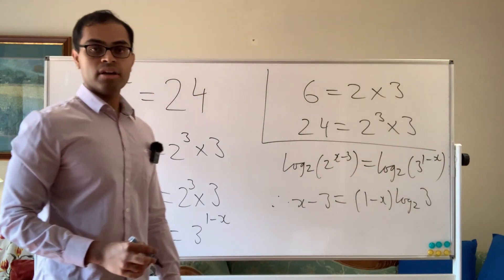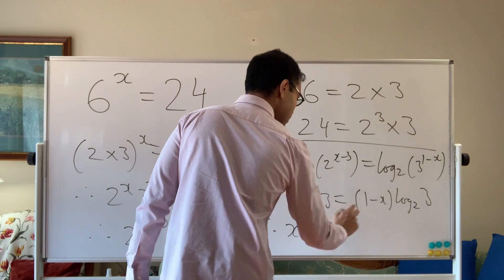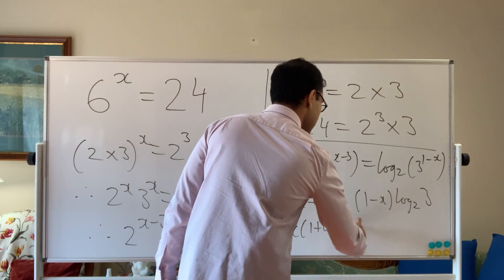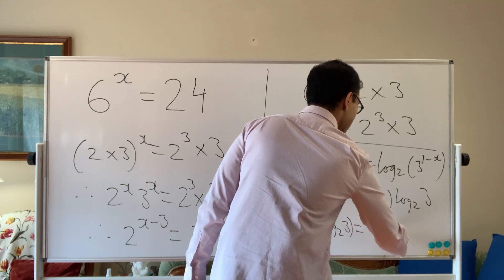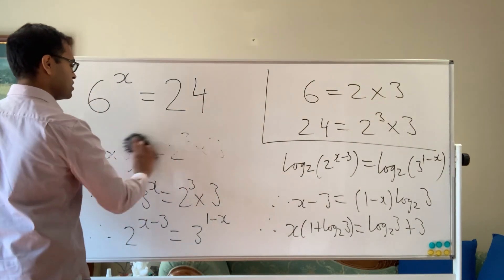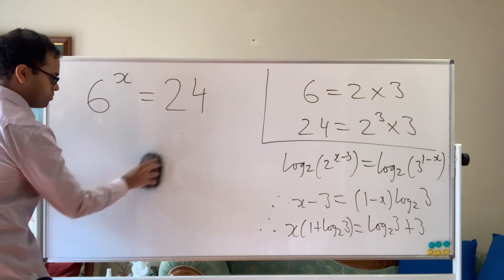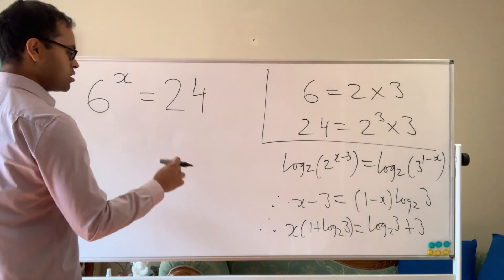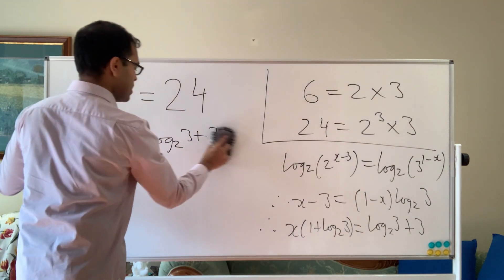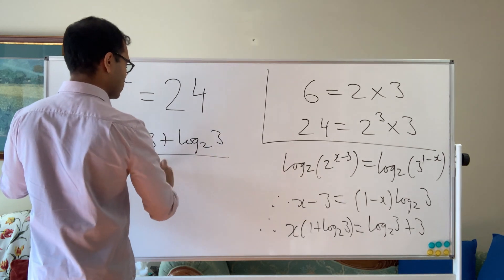Now we solve for x. Bringing all the x terms to one side: x plus x times log base 2 of 3 equals log base 2 of 3 plus 3, which gives us x times (1 plus log base 2 of 3) equals log base 2 of 3 plus 3. Adding 3 to both sides and solving, therefore x equals (3 plus log base 2 of 3) divided by (1 plus log base 2 of 3). That's the answer, and if you have log tables, log base 2 of 3 is a nice simple expression you can look up.